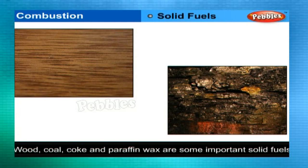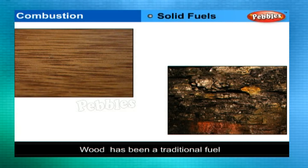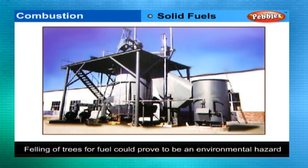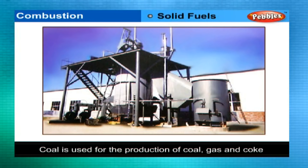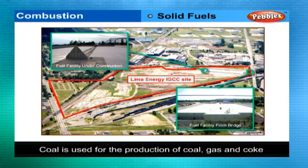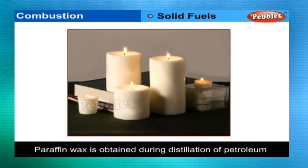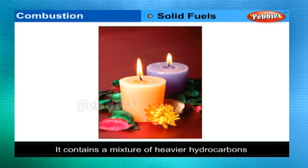Solid fuels: wood, coal, coke, and paraffin wax are some important solid fuels. Wood has been a traditional fuel, but there has been increasing awareness that felling of trees for fuel could prove to be an environmental hazard. Coal is available in plenty in India and is used directly as fuel or for the production of more valuable fuels such as coal gas and coke. Paraffin wax, obtained during distillation of petroleum, contains a mixture of heavier hydrocarbons and is used in the manufacture of candles.